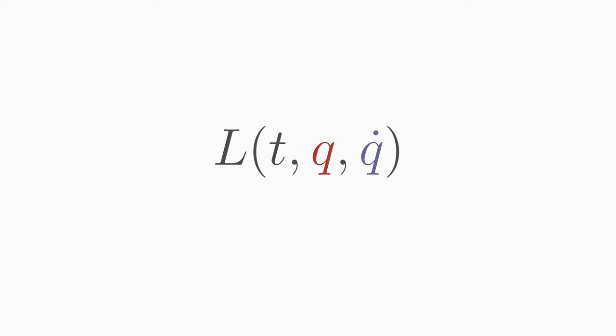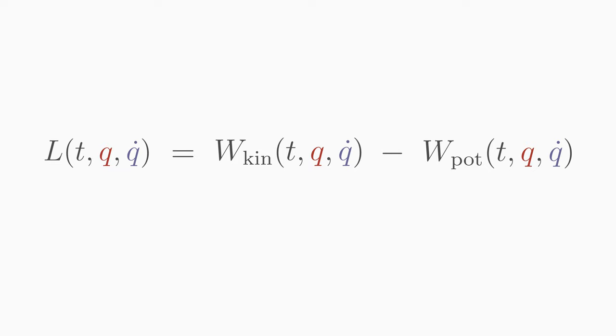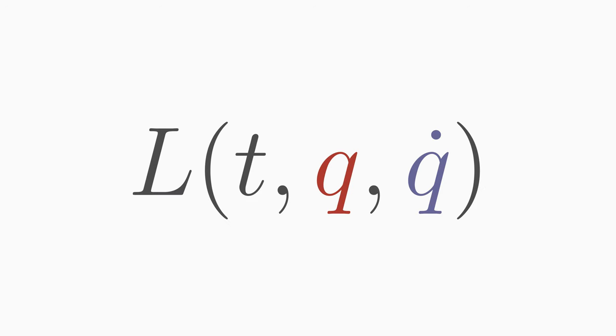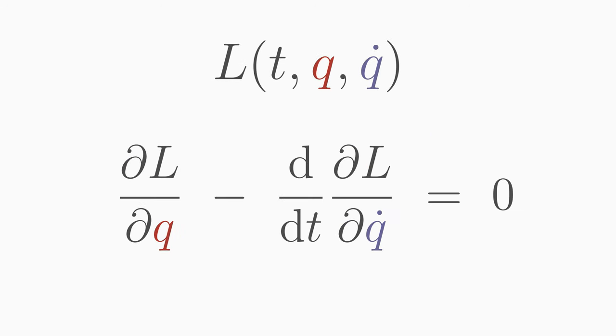In most cases of classical mechanics, the Lagrange function is the difference between the kinetic energy and the potential energy of a particle. Let's look at our example and how we can calculate the parabola from the Lagrange function in the Euler-Lagrange equation.